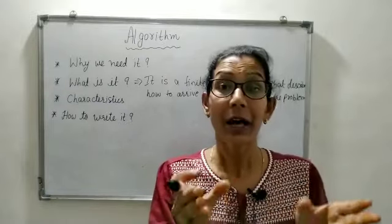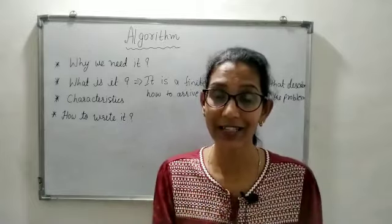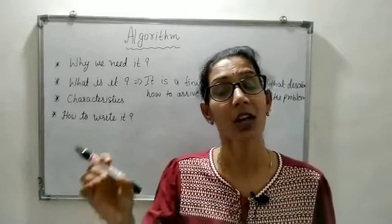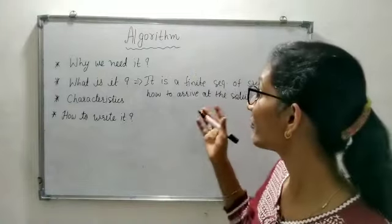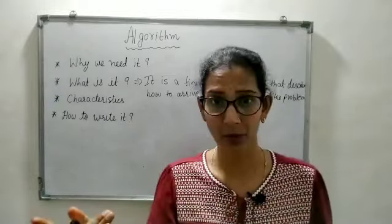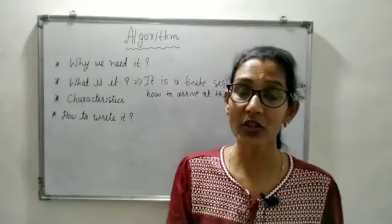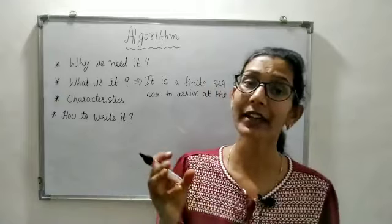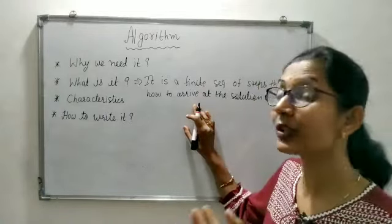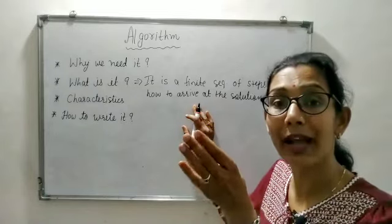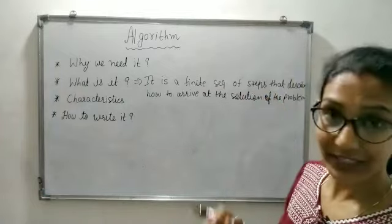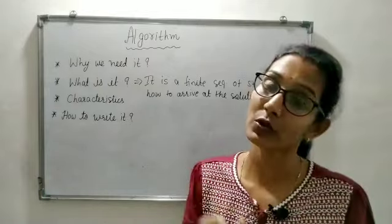Before creating any program, we have to create this building block. We have to follow a finite sequence — a finite set of statements. If we skip any statement, it will create a problem and we will not get the desired output. And if we change the sequence, we will also not get the output. So basically, when we use algorithm, the main purpose is that your program will be created better. The definition is: it is a finite sequence of statements or steps that describe how to arrive at the solution of the problem.